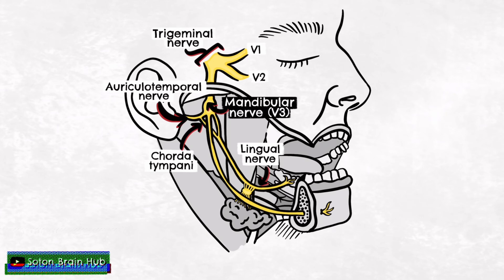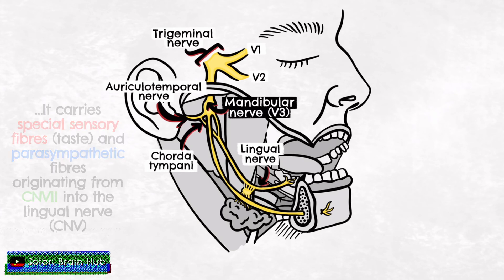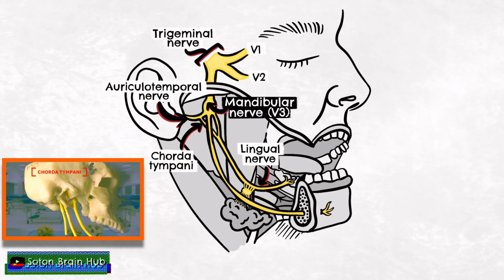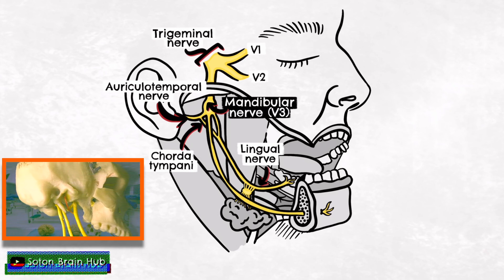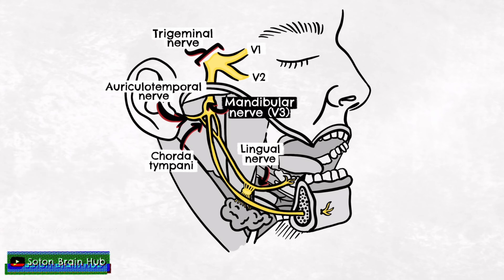The special sensory fibres in the lingual nerve that originate from the facial nerve first travel along the chorda tympani nerve and are responsible for taste sensation in the anterior two thirds of the tongue. The autonomic fibres from the facial nerve that travel in the lingual nerve synapse in the submandibular ganglion before innervating the submandibular and sublingual glands.